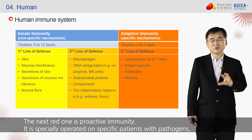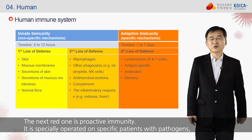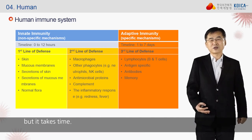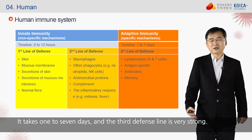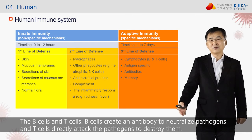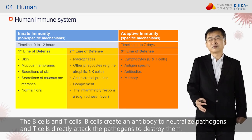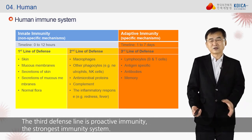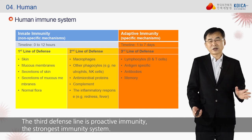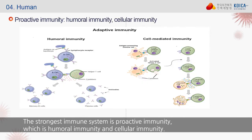The next is proactive immunity, which is specially operated against specific pathogens. It takes time — one to seven days — but the third defense line is very strong, involving B cells and T cells. B cells create antibodies to neutralize pathogens, and T cells directly attack the pathogens to destroy them. The third defense line is proactive immunity, the strongest immunity system — consisting of humoral immunity and cellular immunity.